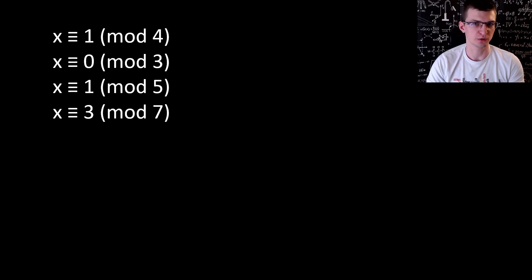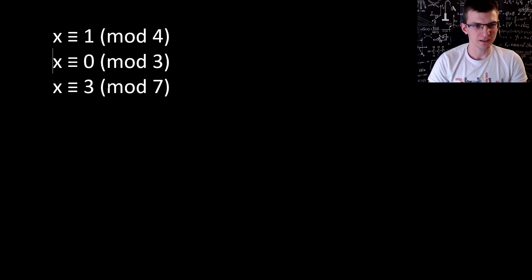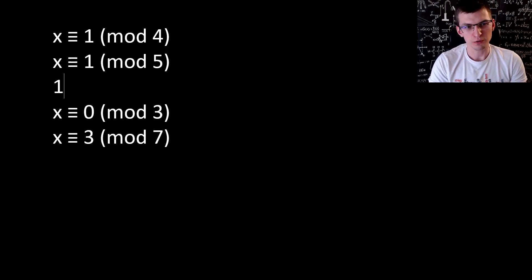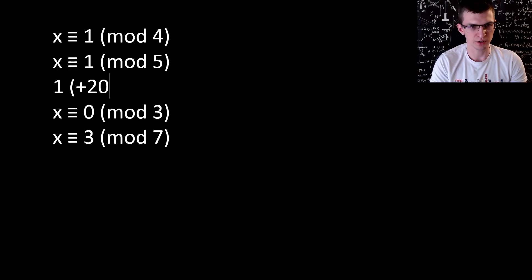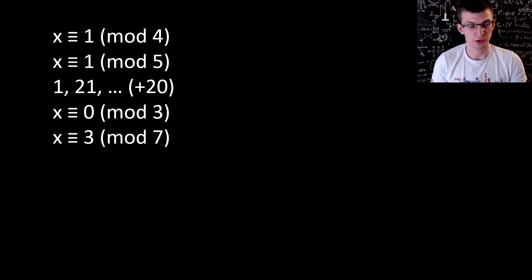Let's solve a bigger example and learn two new tricks. The first one is that you can reorder congruences to make computations easier. When you see equal remainders, it's good to put them at the top because you immediately see the solution for them. I put the third congruence in the second spot, and I know that x equal to 1 works for the first two. Then it can be increased by LCM of 4 and 5 — those are co-prime, so just the product, 20. So the sequence is 1, 21, 41 and so on — solutions for the first two congruences.